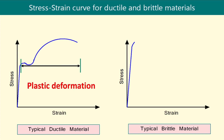In the case of ductile material, there is a high range of plastic or permanent deformation. Hence, ductile materials always indicate their failure through necking or cracks before breakdown. But in the case of brittle materials, there is almost no plastic deformation, and the material will suddenly fail without any indication of failure. Glass is a good example of this behavior.